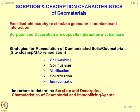Sorption and desorption are opposite interaction mechanisms. Sorption is where a contaminant gets adhered onto the surface of a soil particle, and the reverse mechanism by which the contaminant comes out of the surface and gets dislodged is nothing but the desorption mechanism.